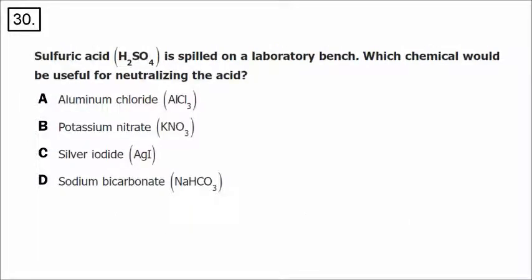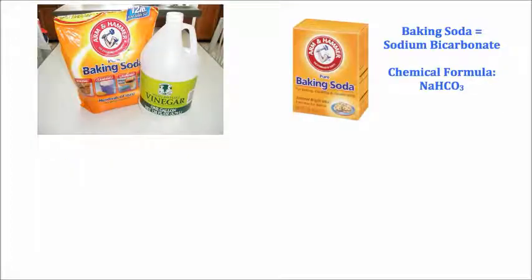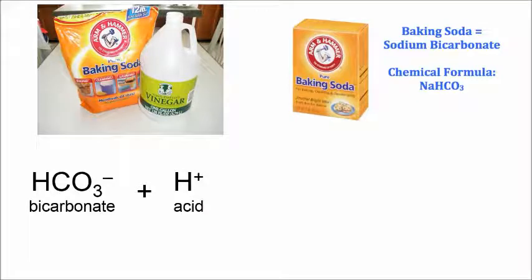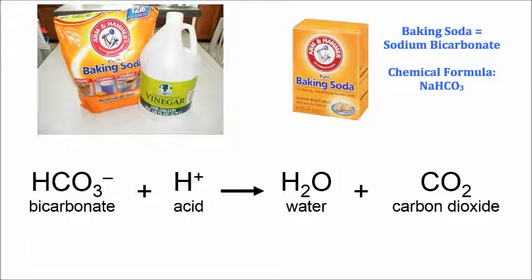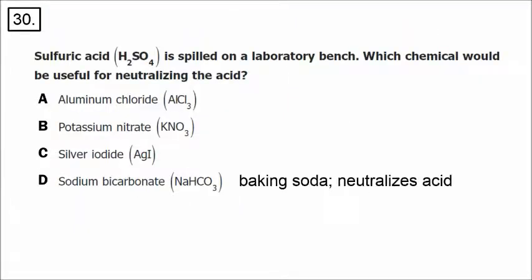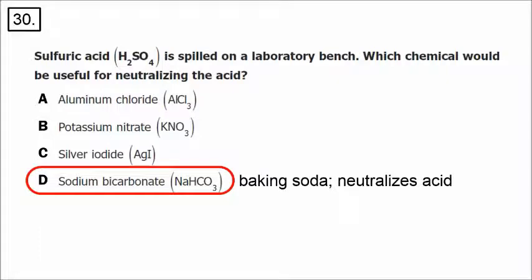Number 30 is a lab safety question. Sulfuric acid has been spilled on the laboratory bench — which chemical would be useful for neutralizing it? Baking soda is sodium bicarbonate, NaHCO3. When you mix baking soda with any acid, the H+ from the acid combines with the bicarbonate ion (HCO3-), producing water and carbon dioxide — that's why you get bubbles when you mix vinegar and baking soda. This neutralizes the acid. The correct answer is D, baking soda.